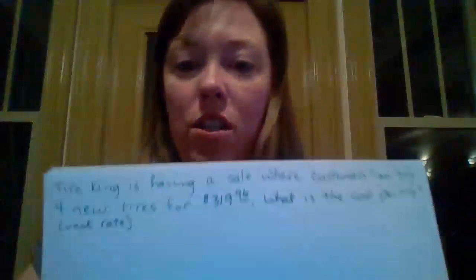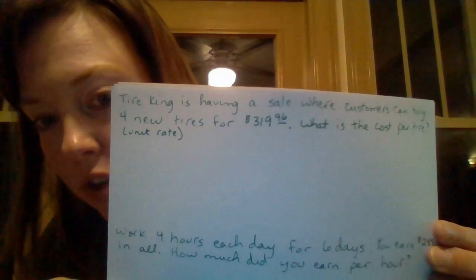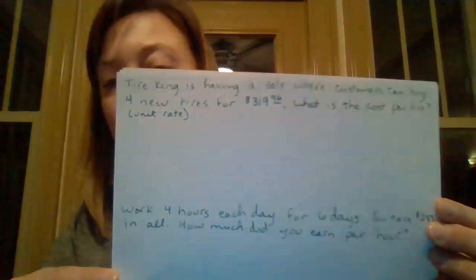It's super simple, but somewhat intimidating sometimes because you're basically dividing. So, a couple examples. The first example is on unit rate: Tire King is having a sale where customers can buy four new tires for $319.96. What is the cost per tire? We're basically looking for the unit rate, which is the price per tire.